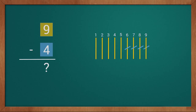Now we will count how many sticks we have: one, two, three, four, five. We have a total of five sticks. This way we got our answer as five. So nine minus four equals five. This way today we learned subtraction with the help of sticks.